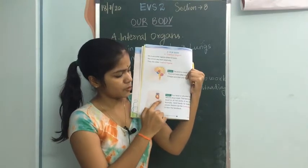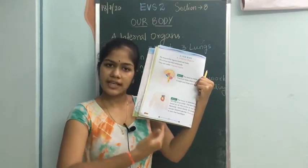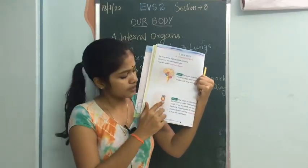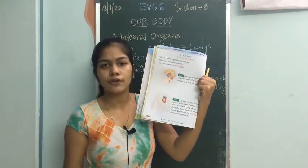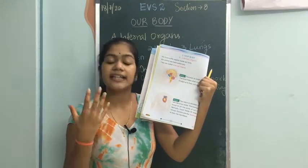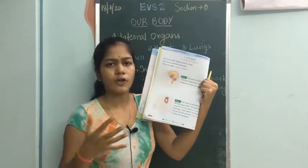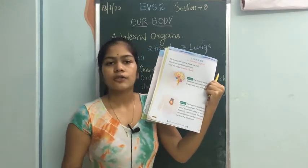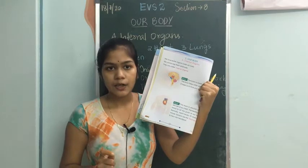The heart is situated on the left side of the chest — not entirely on the left side, but slightly towards the left. The main function of the heart is that it pumps blood to all parts of the body, including the brain. All other parts also get blood from the heart. Normally, the heart beats 72 times per minute.